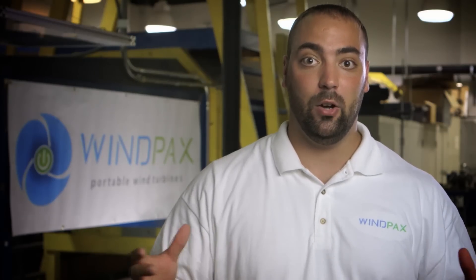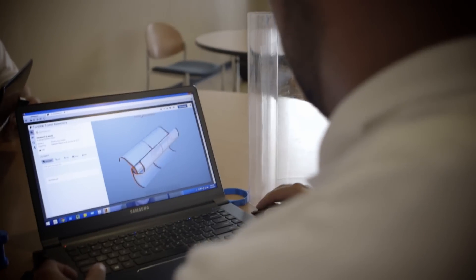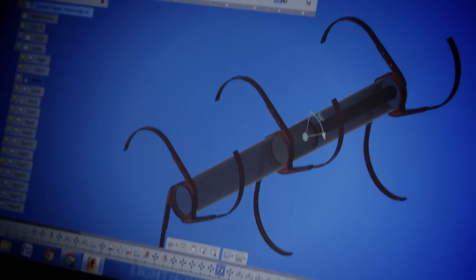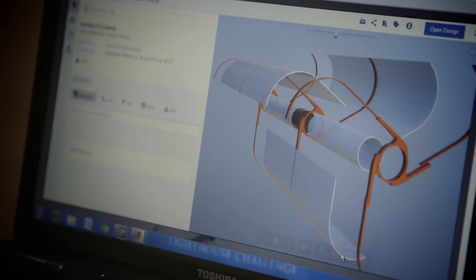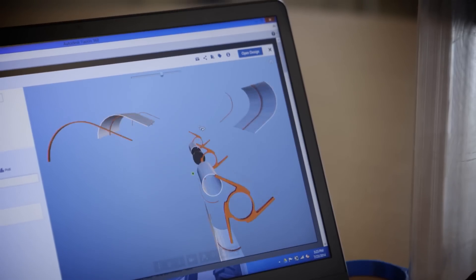Before Fusion 360, we'd take the model directly to them and show them. Now I invite them to the project. I open it up as an animation to really understand how each piece works together. We can render things to look photorealistic and send these off to investors or people interested in buying the product.